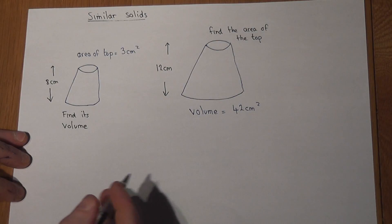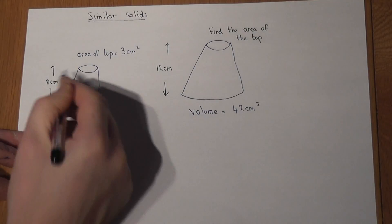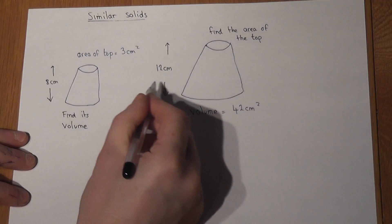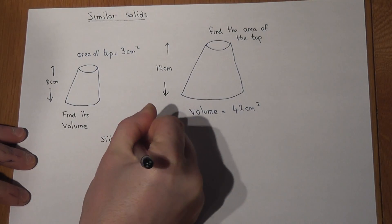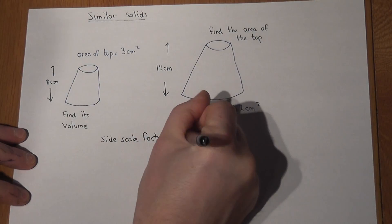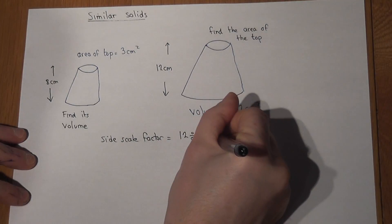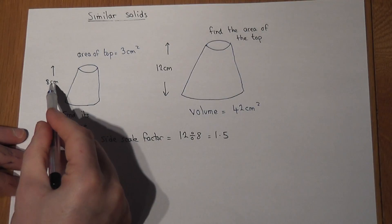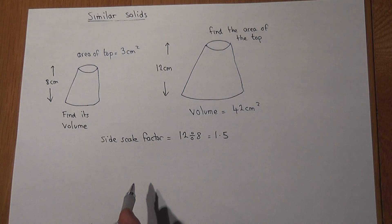So I can find how much times bigger this shape is than the first one to find the scale factor. This will be a side scale factor. If I do 12 divided by 8, I get 1.5. This shape is 1.5 times bigger than the smaller one.